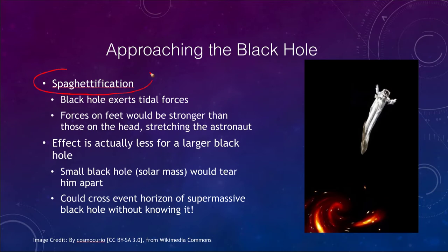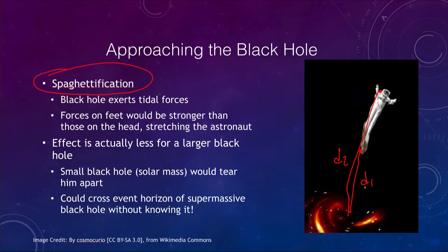As we get close to the black hole, we get a term known as spaghettification. This is because black holes exert tidal forces. From the black hole to the astronaut's feet is one distance, and from the black hole to the astronaut's head is another distance. Because gravitational force depends on distance, there is a stronger gravitational force on his feet than on his head — meaning the astronaut would be stretched by tidal forces. This happens here on Earth because of the Moon, but to a much smaller effect. Close to a black hole it would become very extreme, eventually stretching and squeezing the astronaut into a very long thin string of spaghetti.